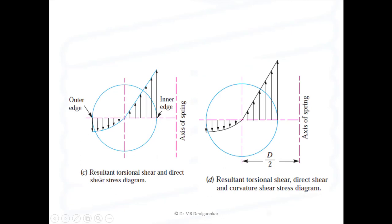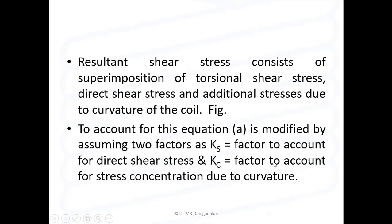Moving ahead, we will see the superposition of torsional shear stress and direct shear stress — that is the resultant torsional and direct shear stress diagram. At the outer edge the pattern is this way, and at the inner edge the magnitude of stress is more. Figure D shows the resultant torsional shear, direct shear, and curvature shear stress diagram. The resultant shear stress accounts for the superimposition of torsional shear stress, direct shear stress, and additional stresses due to curvature of the coil.